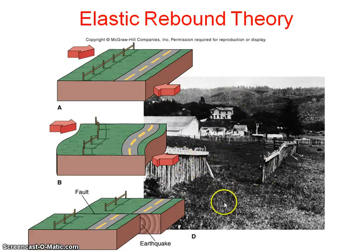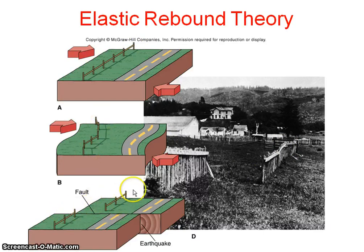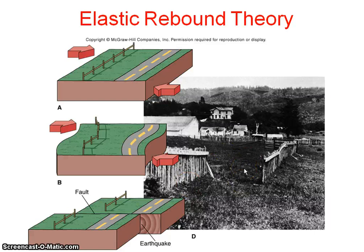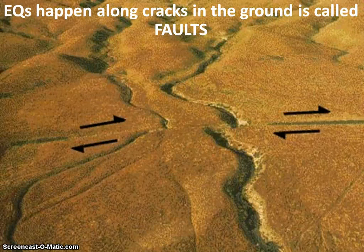This is also illustrated using a fencing example. Here you can see the fencing. After the elastic rebound occurs, the fencing shifts. Originally the fence is straight, but when an earthquake occurs it moves, and then rebounds to its original position. Due to the fault region it shifts — you can view this effect after the earthquake in San Francisco, showing what a faulty region looks like.